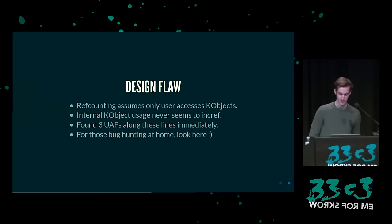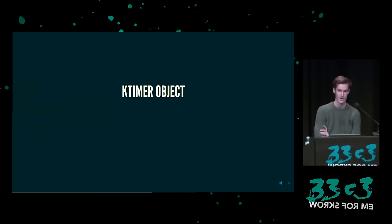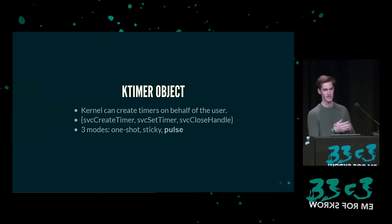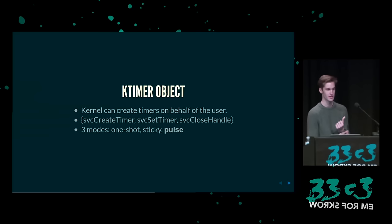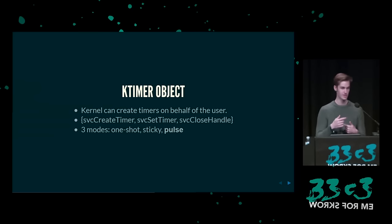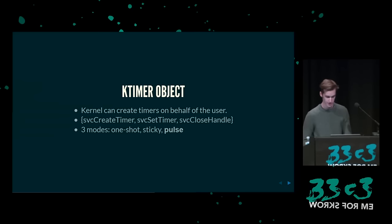Ich spreche jetzt über das Timer-Objekt — das ist ein recht simpler Kernel-API. Man kann den Timer abfragen, stellen — das ist einfach ein normaler Synchronization-Primitiv. Ich schaute rein und fand, da gibt es einen, der Pulse heißt. Was der macht: wenn man den Timer auf Pulse setzt, wird zu jeder Periode des Pulses alles, was darauf wartet, ein Signal bekommen. Wenn man darauf wartet, bekommt man das nächste Signal — das macht ein paar Sachen mit diesem Objekt, die etwas komplizierter sind als die anderen Modi und anderen Kernel-Objects.